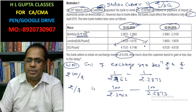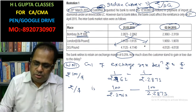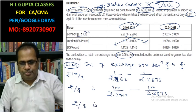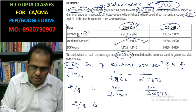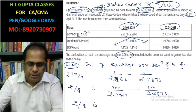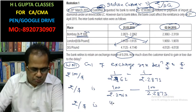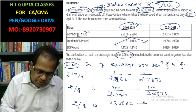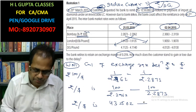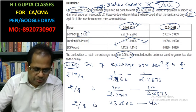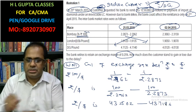This gives us Rupees per dollar: 100 divided by 2.2873 equals 43.7196, and 100 divided by 2.2960 equals 43.5502. These are our Rupees per dollar rates for 25th March.